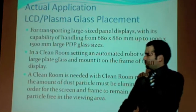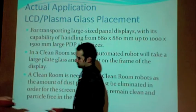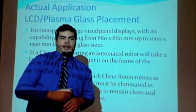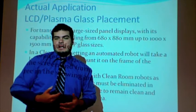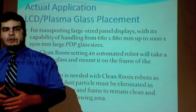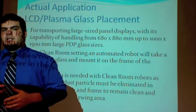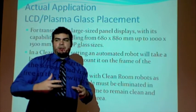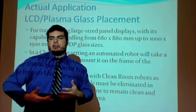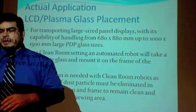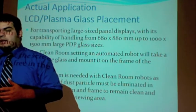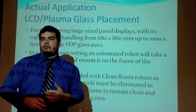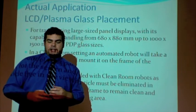Our robot is going to lift LCD glass panels from one location to another. To transport these large pieces of glass carefully, cable robots are needed — there must be no dust and no static electricity when dealing with electrical and visual devices like LCD screens. The glass sizes range from 600 by 880 millimeters up to 1,000 by 1,500 millimeters.